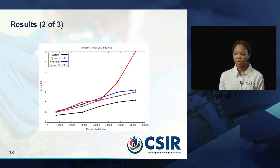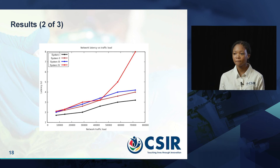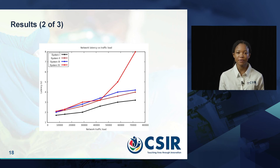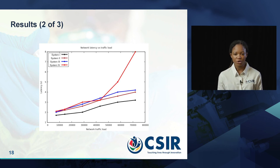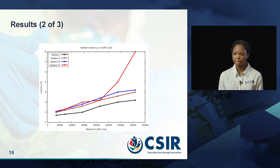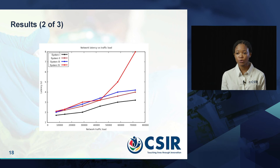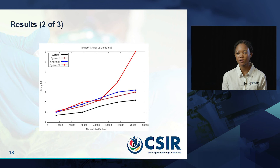For the second experiment, we looked at the impact of network traffic load on latency. As we can see from the graph, the end-to-end delay in fulfilling a request increases with an increase in network traffic load. As the need for computational resources grows, the fog nodes become increasingly more constrained and more resources are offloaded to the cloud for processing. The proposed system — system 1 — appeared to use resources more efficiently and performed better than the other three systems in terms of network latency.